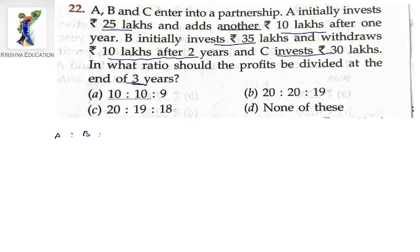A's share is calculated as: 25 lakhs multiplied by 1 year, plus 35 lakhs multiplied by 2 years — because after 1 year, 10 lakhs is added, making the investment 35 lakhs for the remaining 2 years.